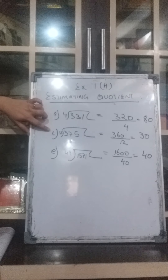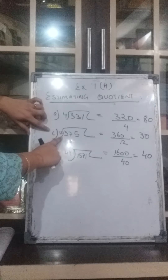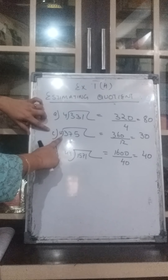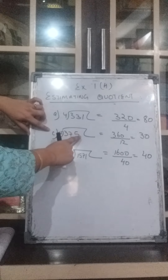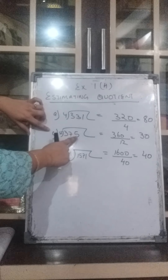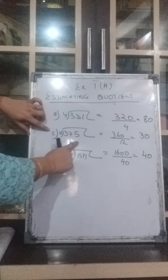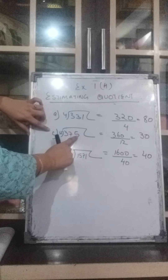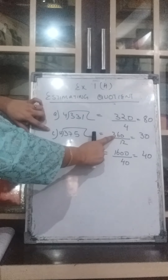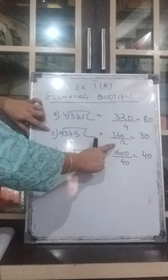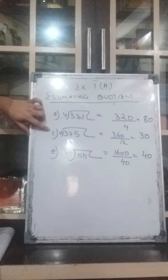Now C part: 375 divided by 12. Here again they have estimated or rounded off the dividend. The number near to 375 which can be easily divided by 12 is 360. So 360 divided by 12 gives you 30. The answer is 30.